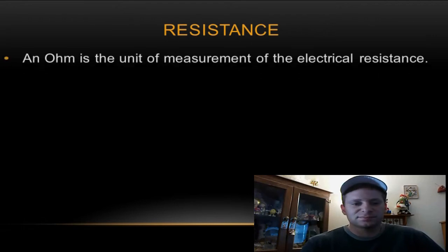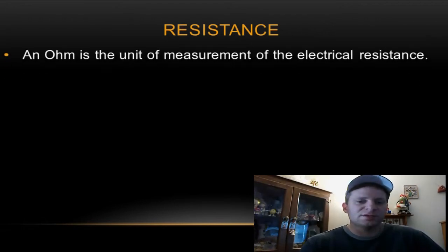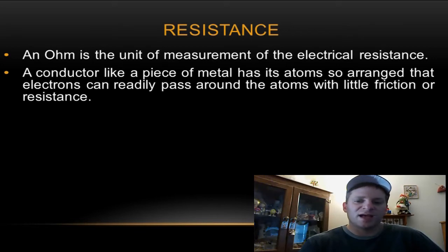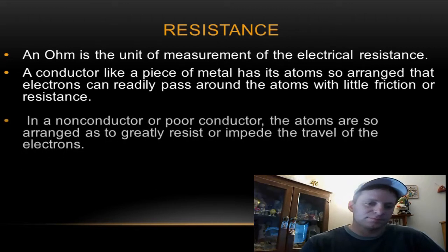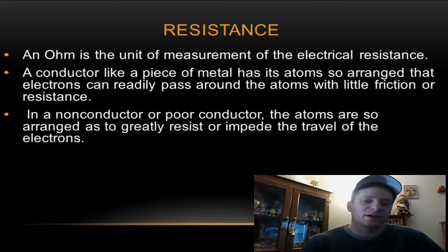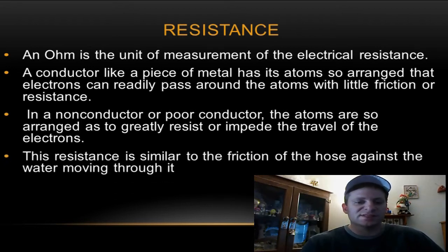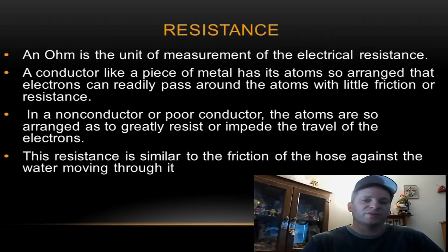Electrical current is like the rate that water flows through a hose. Resistance: an ohm is the unit of measurement of electrical resistance. A conductor like a piece of metal has its atoms arranged so that electrons can readily pass around the atoms with little friction or resistance.